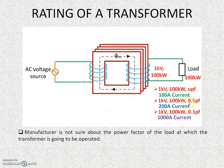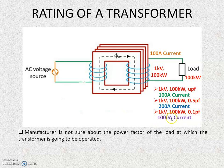We have observed different power factor conditions from unity power factor down to 0.1 power factor, and the current changes from 100 amperes to 1000 amperes. If the maximum current the transformer secondary winding can safely handle is 100 amperes, then only the unity power factor case is safe. At 0.5 power factor the current is already too high, and at 0.1 power factor the current is about 10 times the maximum — this may burn the transformer secondary winding.